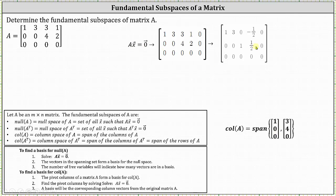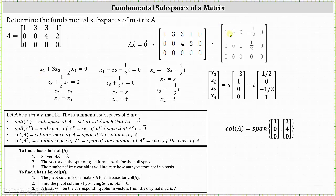Now let's continue solving. The first row of the augmented matrix in reduced row echelon form indicates x₁ plus 2x₂ minus one half x₄ equals zero. The second row indicates x₃ plus one half x₄ equals zero. Notice how there are no pivots in column two and column four, indicating x₂ and x₄ are free variables. Let's parameterize the solution by letting x₂ equal s and x₄ equal t. Solving the first equation for x₁, we have x₁ equals negative 3s plus one half t. Solving the second equation for x₃, we have x₃ equals negative one half t, and x₂ equals s and x₄ equals t.